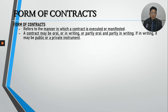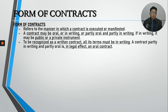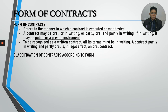However, private instruments are still accepted in court — it is just better if they are public instruments, meaning notarized. To be recognized as a written contract, all the terms of the agreement must be in writing. If a contract is partly in writing and partly oral, it is, in effect, an oral contract. Remember also the classifications of contracts according to form.